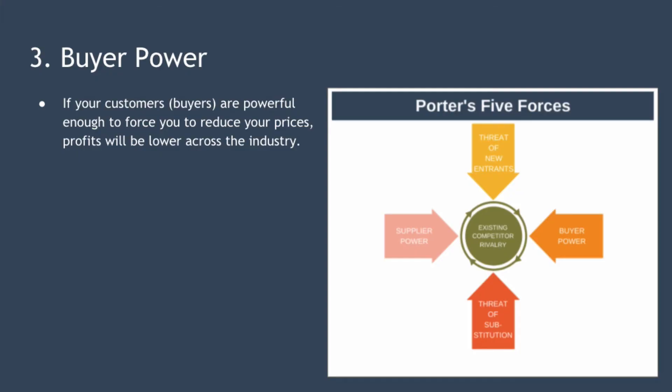The third force is buyer power. If your customers are powerful enough to force you to reduce your prices, then profits will be lower across the industry. Buyer power will be higher when there are few buyers, products are undifferentiated from each other, and the cost of switching from one supplier to another is low. When buyers have power they can play rival firms against one another, and that drives prices down across the industry.